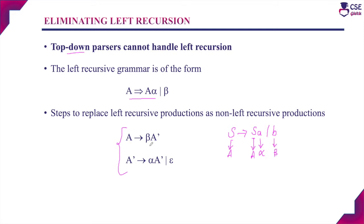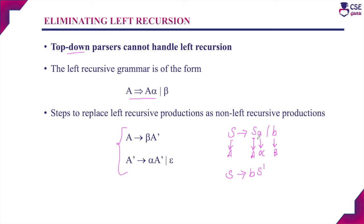To eliminate the left recursion, the first step is A derives beta A-dash, where A is S, beta is b, and A-dash is S-dash — giving S derives b S-dash. The second step is A-dash derives alpha A-dash or epsilon, where A-dash is S-dash and alpha is a — giving S-dash derives a S-dash or epsilon.